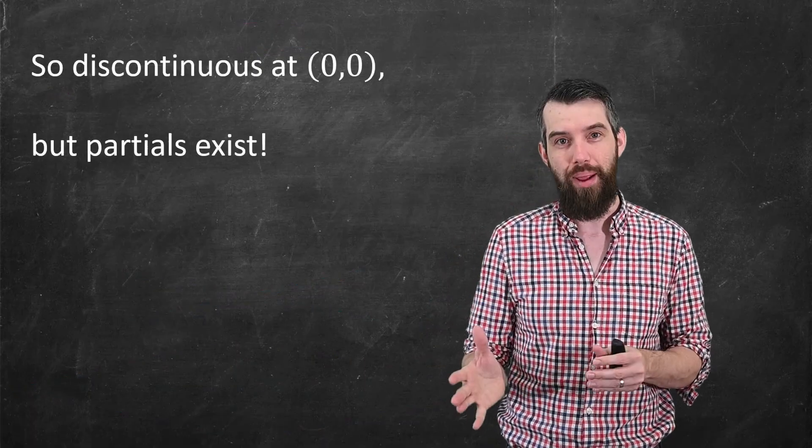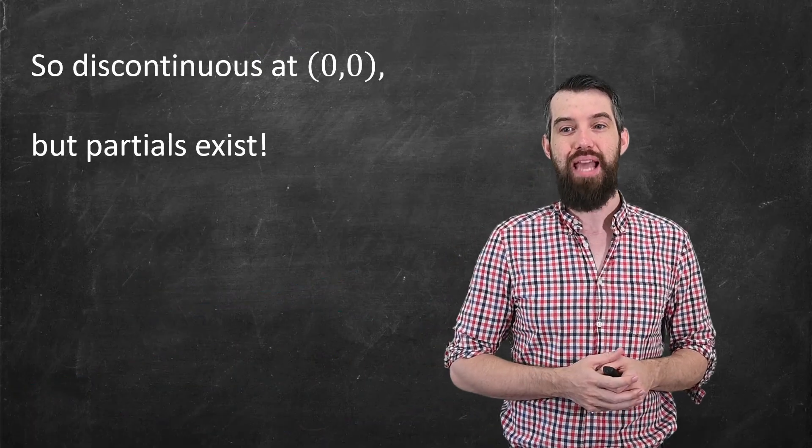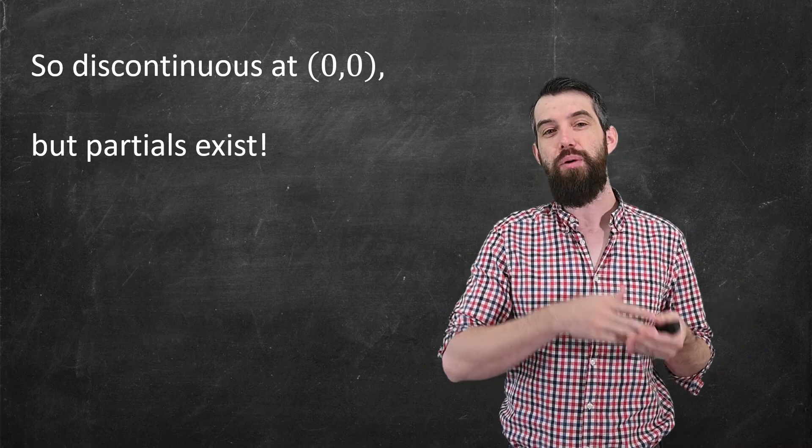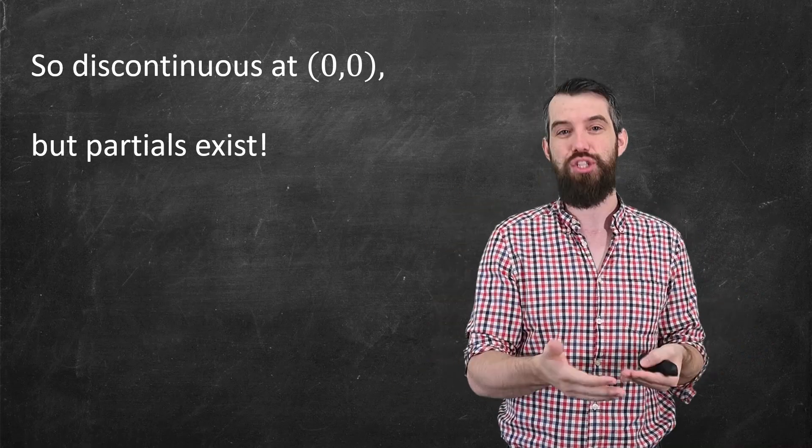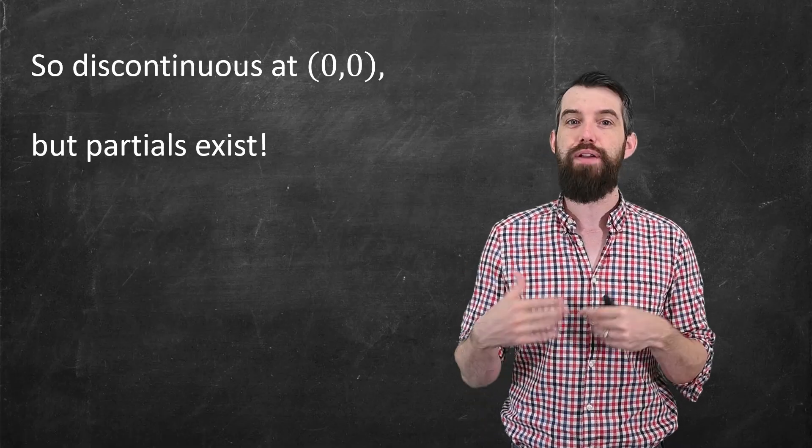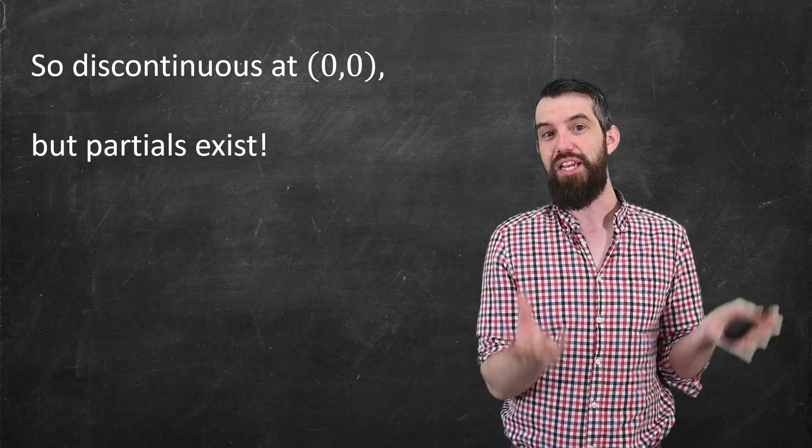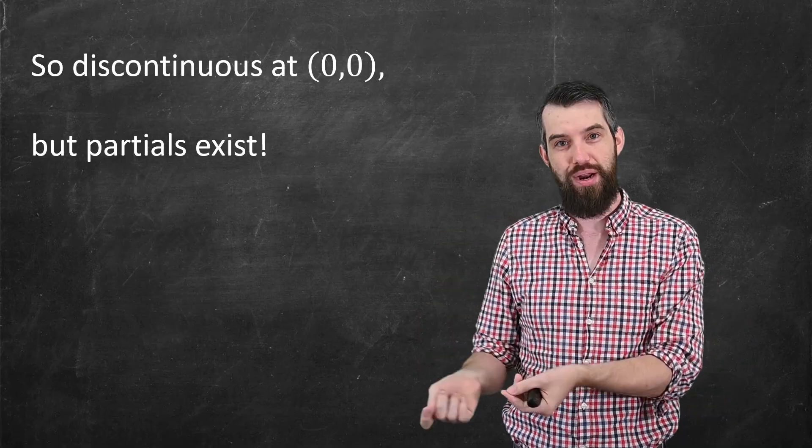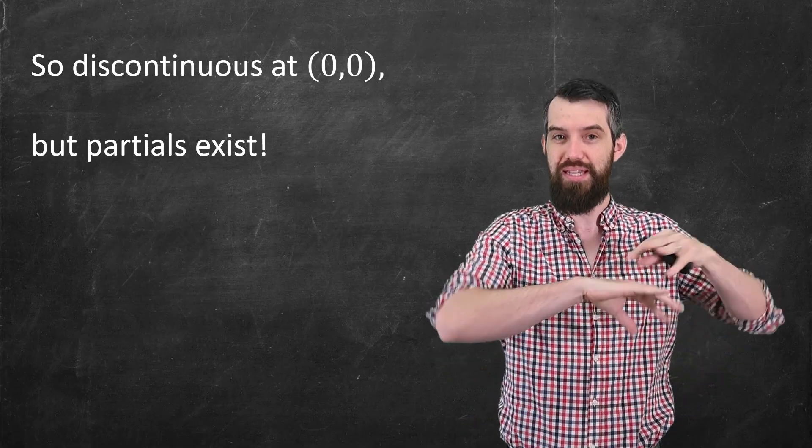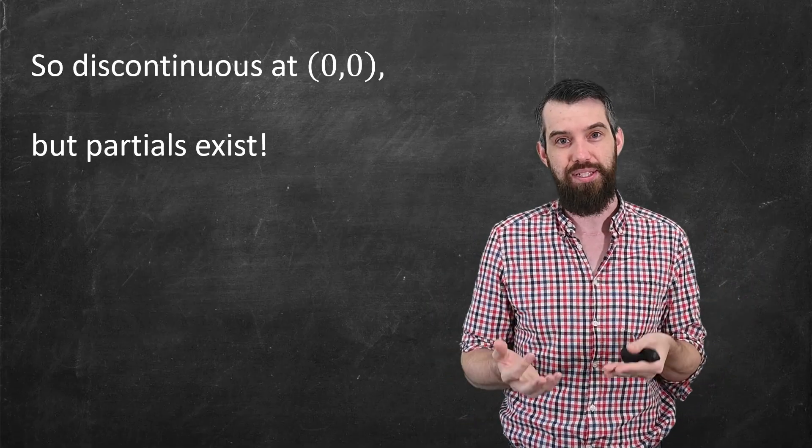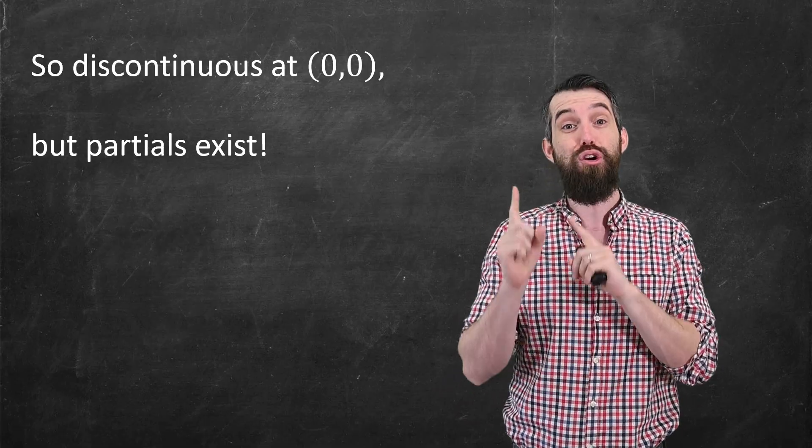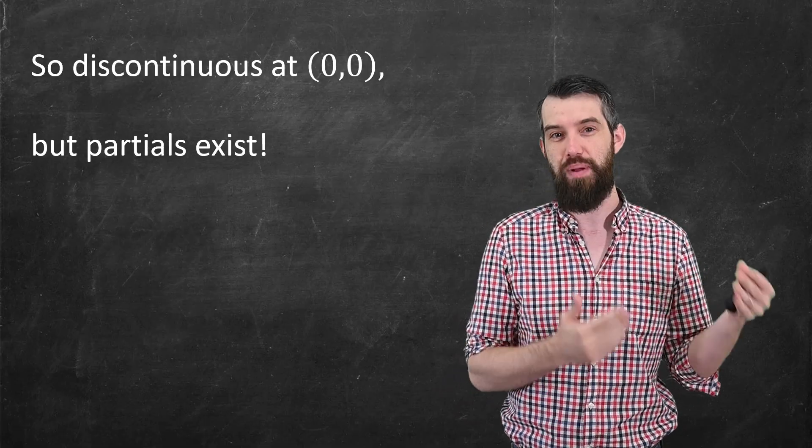Okay, so what's our takeaway? We now have an example here that is discontinuous at (0,0), but the partials exist at (0,0). And so this is a different relationship. The relationship from single variable calculus that a discontinuous function meant it was not differentiable is not exactly valid, at least at the level of partial derivatives. It can be discontinuous, but the partial derivatives exist. So what this really motivates us is that we need a better notion of differentiability.